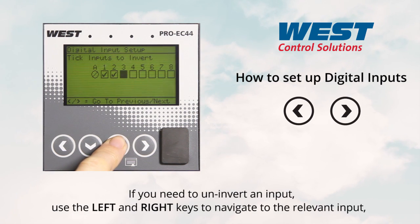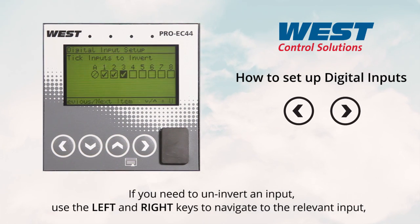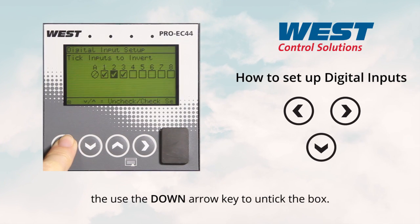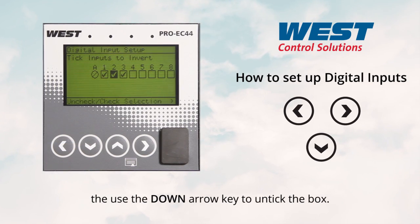If you need to un-invert an input, use the left and right keys to navigate to the relevant input, then use the down arrow to untick the box.